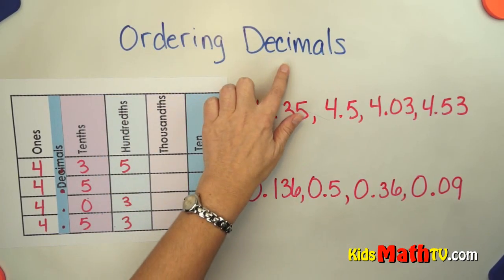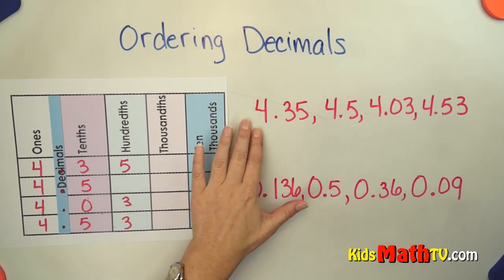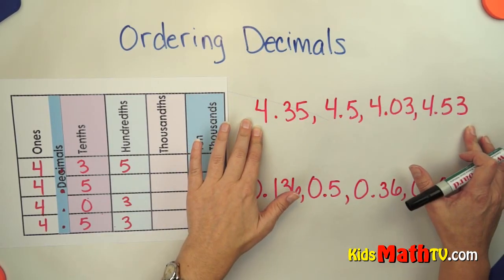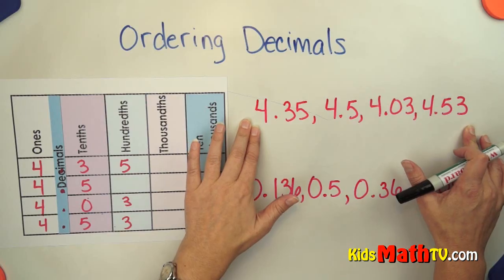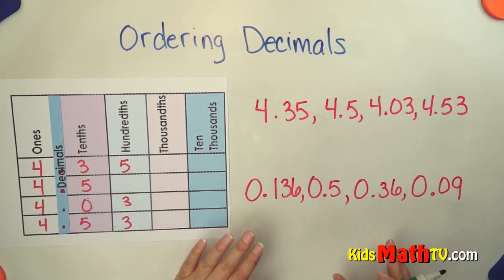In this lesson you will learn about ordering decimals. So I have some decimals, a decimal set, or a list of different decimals. I have two different sets, we'll do two different problems.